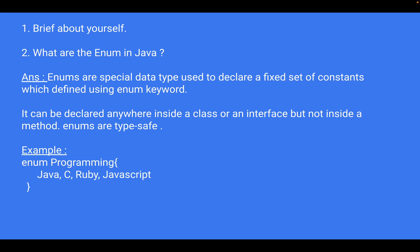The second question the interviewer asks is: what are enums in Java? Enums are a special data type used to declare a fixed set of constants, defined using the enum keyword. In Java, an enumeration allows you to define a set of named constants representing fixed values. For example, I have declared an enum called 'Programming' which contains constant values like Java, C, Ruby, and JavaScript.